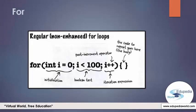There are two types of for loops. One is a non-enhanced for loop and the other one is an enhanced for loop. We first talk about the regular one, which is the non-enhanced for loop. It has three parts.